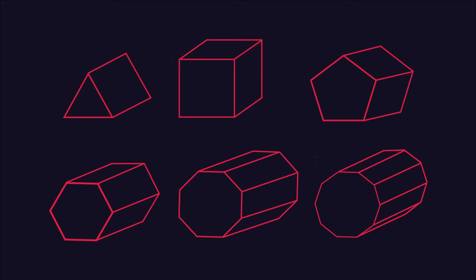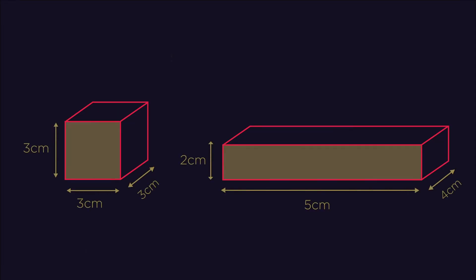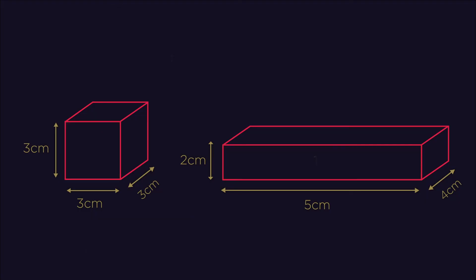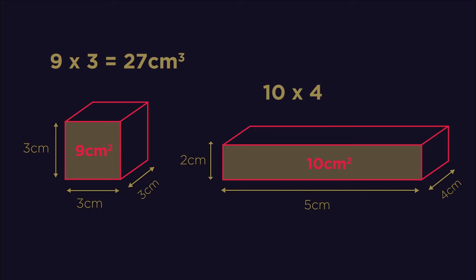Let's look first at two common prisms: the cube and the cuboid. In these examples, think about how you might find the cross-sectional area. We can find the cross-sectional area by multiplying the length by the width. The cube is 3 times 3, so 9 centimeters squared, and the cuboid is 5 times 2, so 10 centimeters squared. Now all we need to do is multiply this by the last remaining dimension, the depth. So 9 times 3 for the cube gives 27 centimeters cubed, and 10 times 4 for the cuboid gives 40 centimeters cubed. Simple!